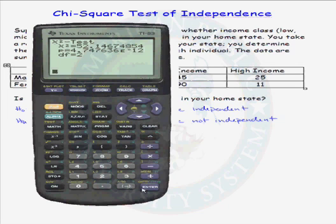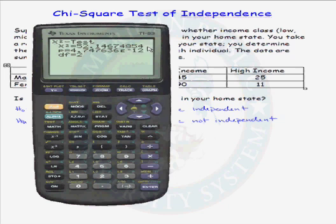The test gives us the Chi-squared test statistic value. It is 52.1 for this problem. The p-value is 4.7 times 10 to the negative 12 — an extremely small p-value. The test also gives us the degrees of freedom for our Chi-squared test statistic.